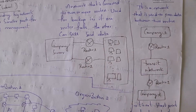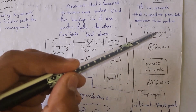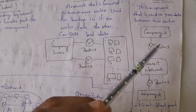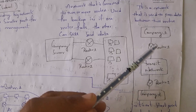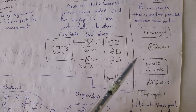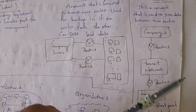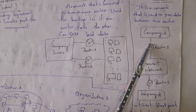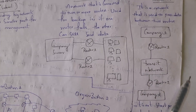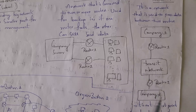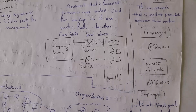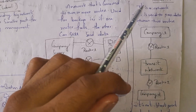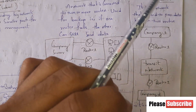Whenever one company wants to transfer data to another company, it will first send data to its router, and from that router through various routers — that is through the transit network — data will reach the destination company's router. The starting point and the ending point are the two company routers, and whatever network lies in between them is the transit network. So a transit network is a network used to pass data between two routers.